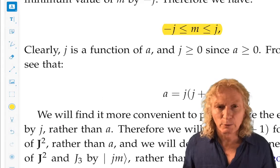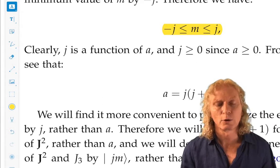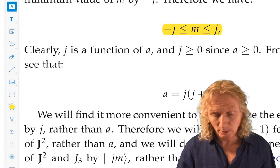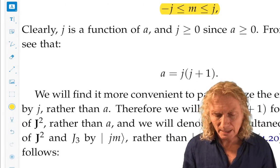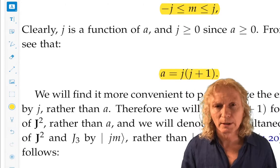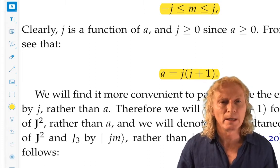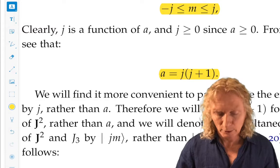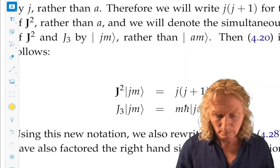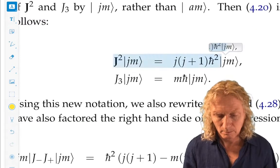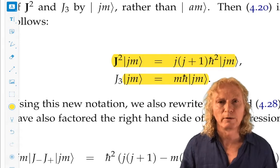If we examine those expressions in the corollary a bit more closely and the diagram, we can see that A has to be J times J plus 1. So, we're now going to use this notation rather than A for the eigenvalue of J squared. This is the expressions we've already developed.